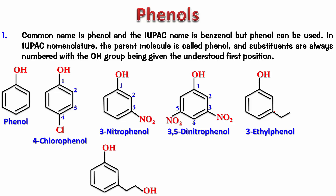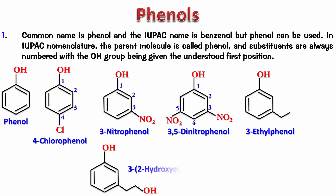Try this one. Here you have an OH group as a substituent. Whenever OH occurs as a substituent it is written as 'hydroxy'. You number it: this is 1, this is 2, so it is 2-hydroxy at position 3. It's going to be 3-(2-hydroxyethyl)phenol.